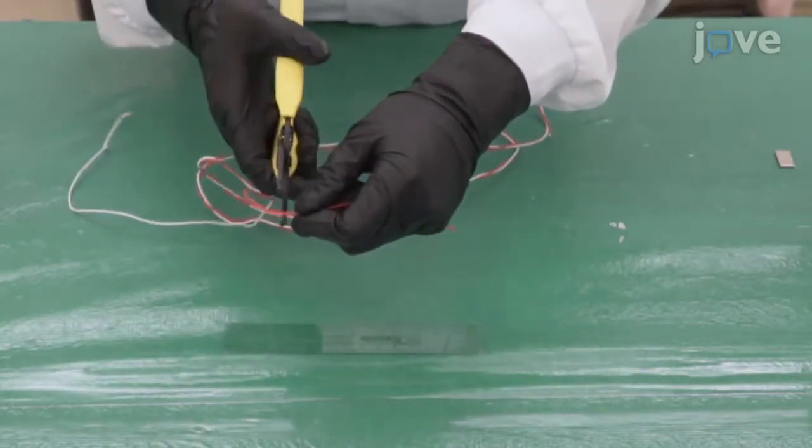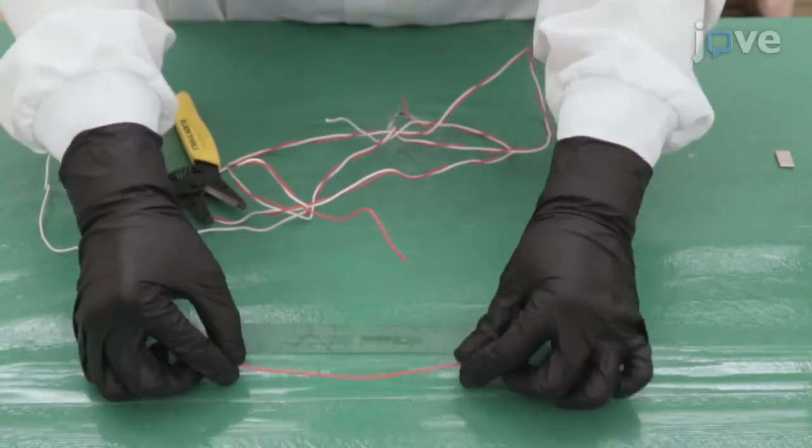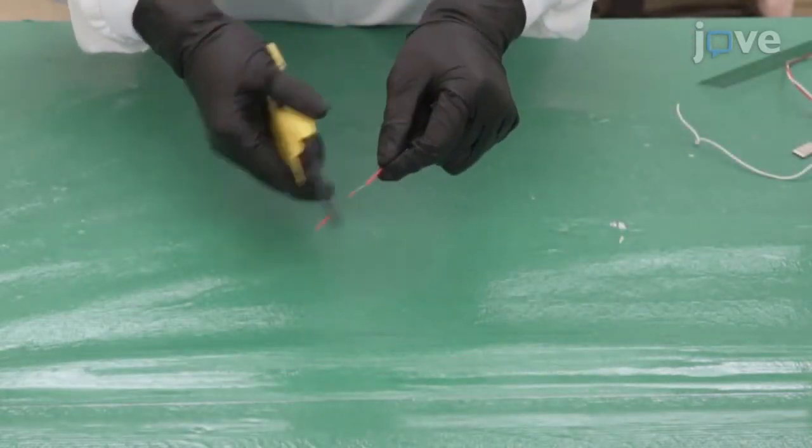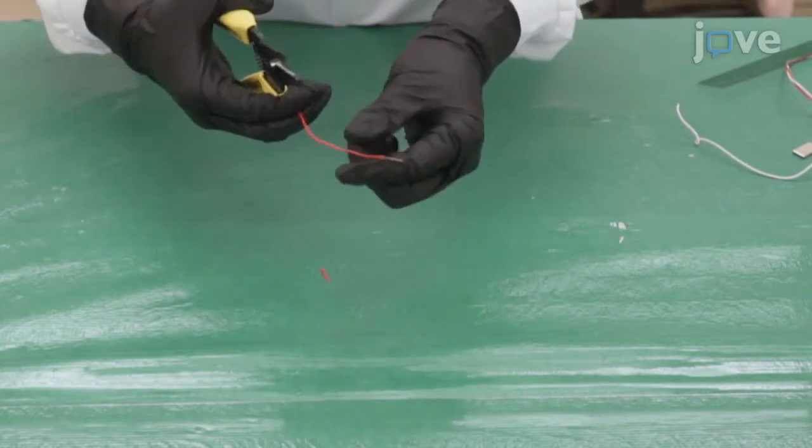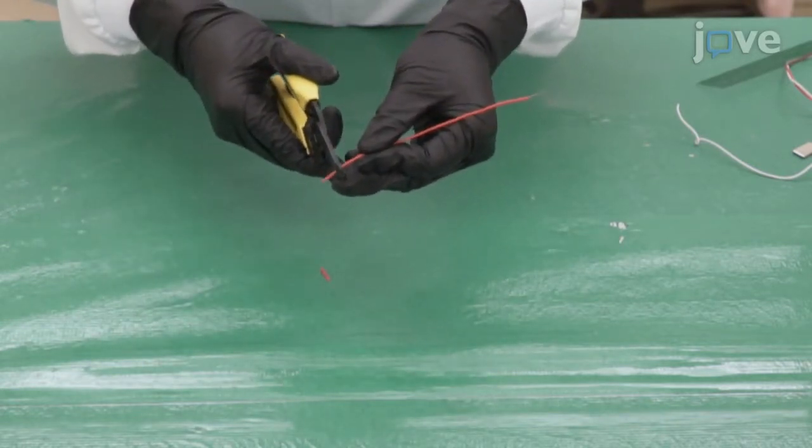To prepare the working electrode, cut a five centimeter long piece from a one to two millimeter diameter electrical wire and strip away about one centimeter of the protective plastic cover on both ends to expose the interior copper wire to air.